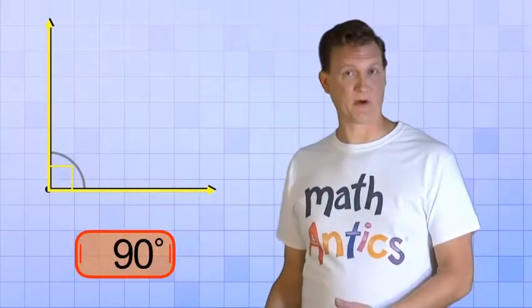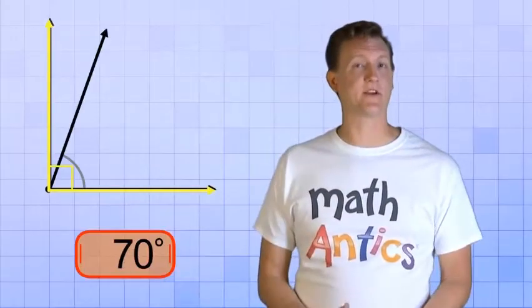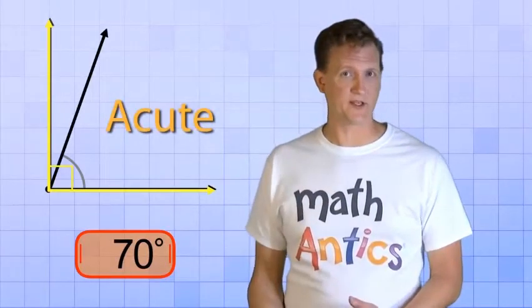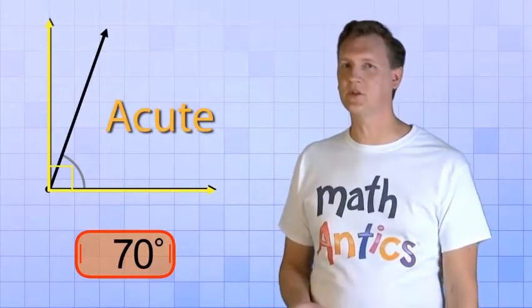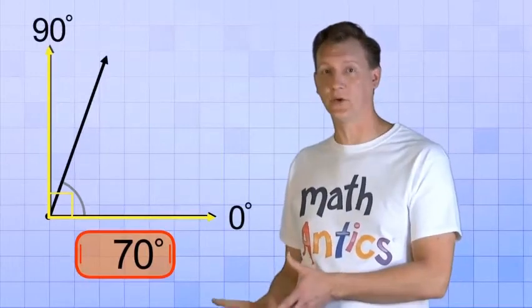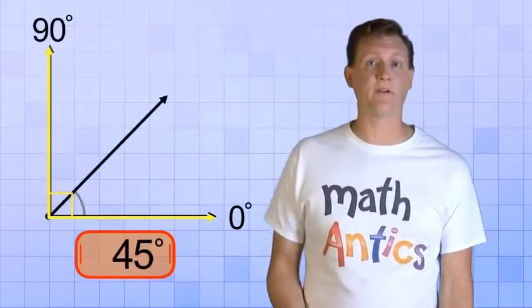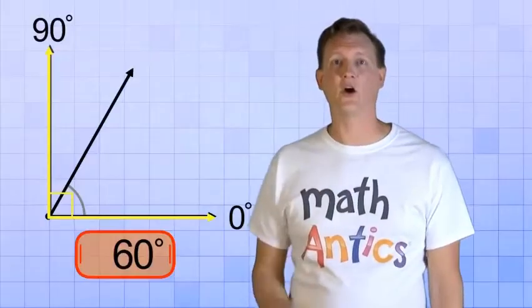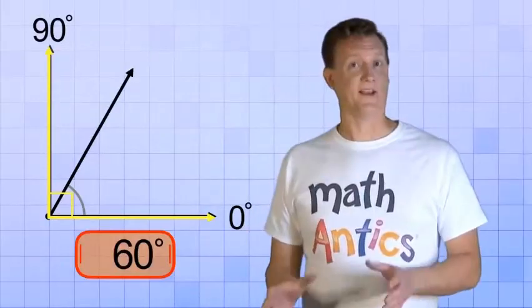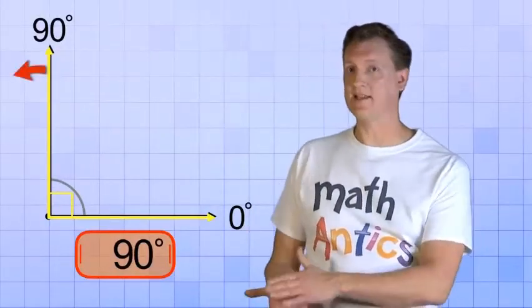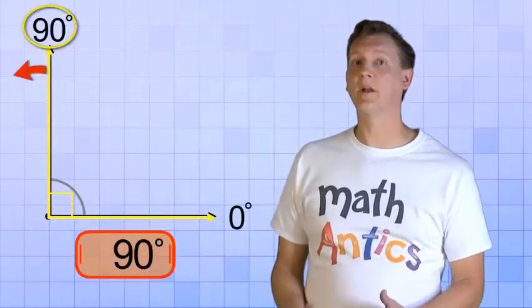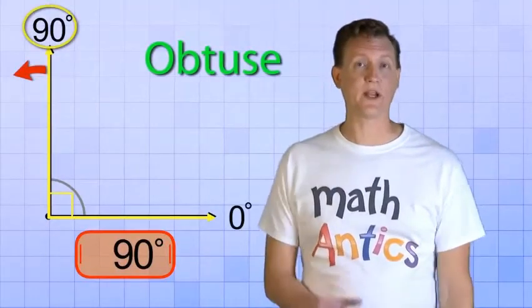Ok, do you remember from our last video that all angles less than a right angle are called acute angles? So that means that all the angles we've seen so far that are between 0 and 90 degrees like 10, 30, 45, 60, and so on are acute angles. But, if we keep on rotating our ray past 90 degrees, we'll start forming obtuse angles because they're greater than a right angle.